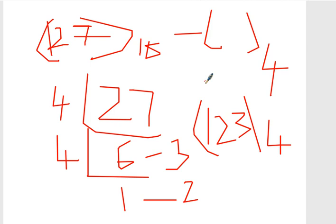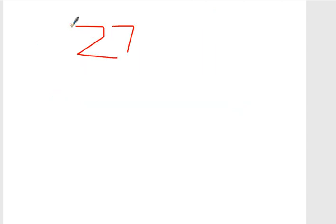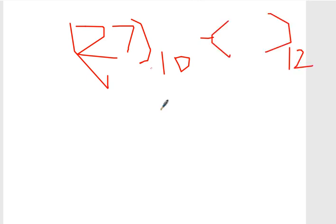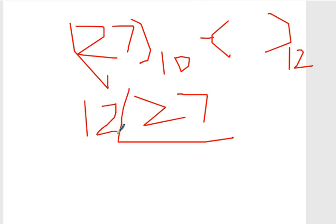Suppose you want to convert 27 base 10 to base 12. What you should do is divide 27 by 12. 12 times 2 is 24, remainder 3. That's all. So 27 equals 23 in base 12.